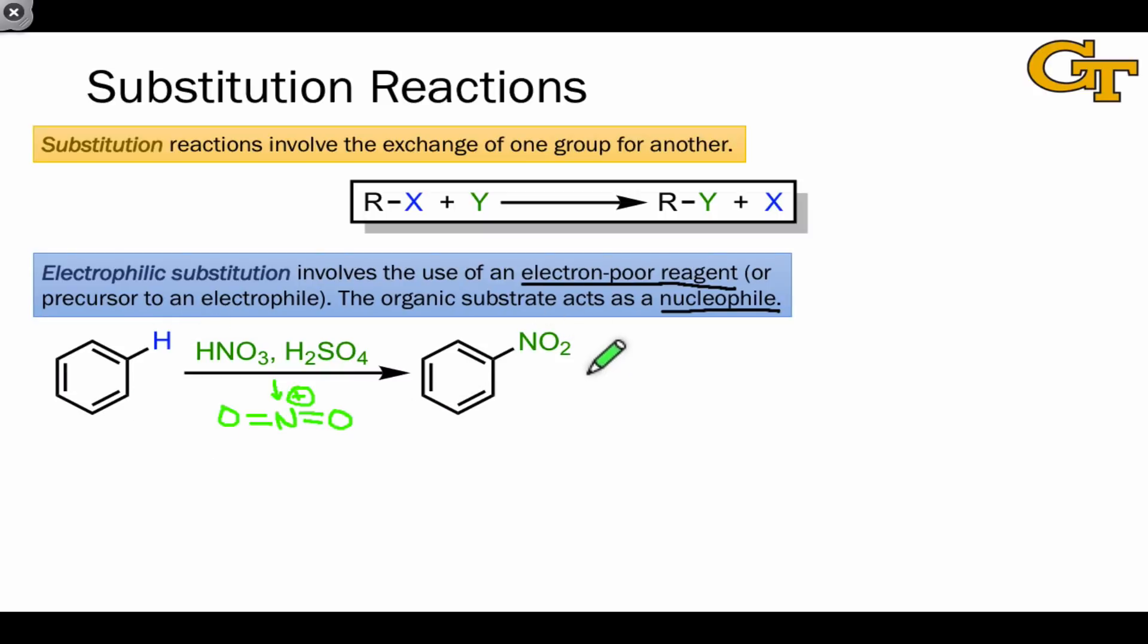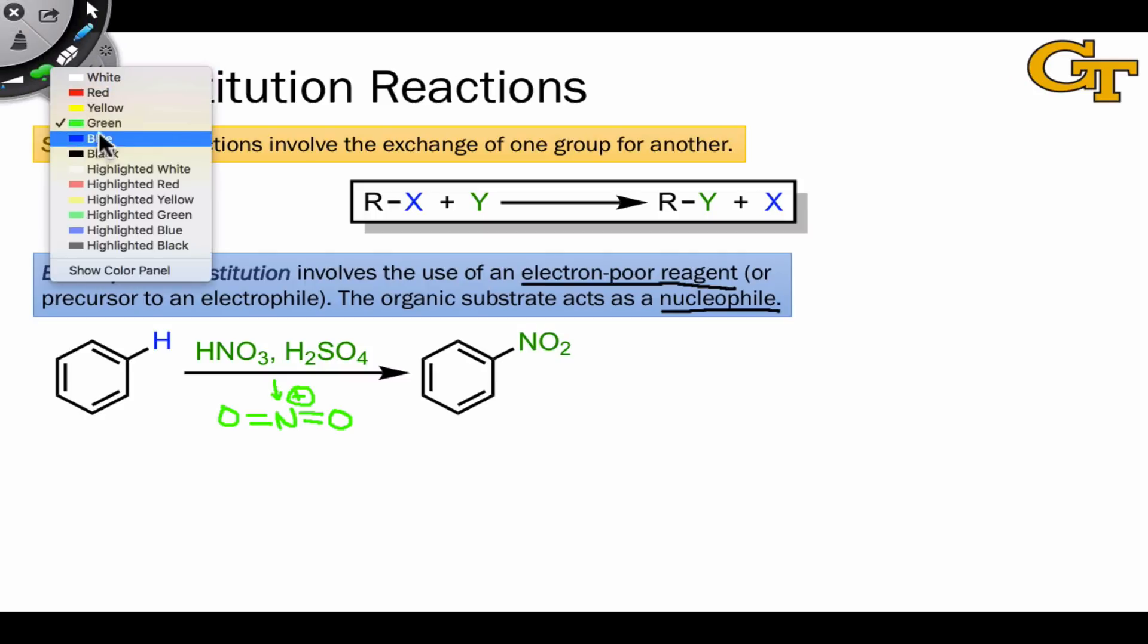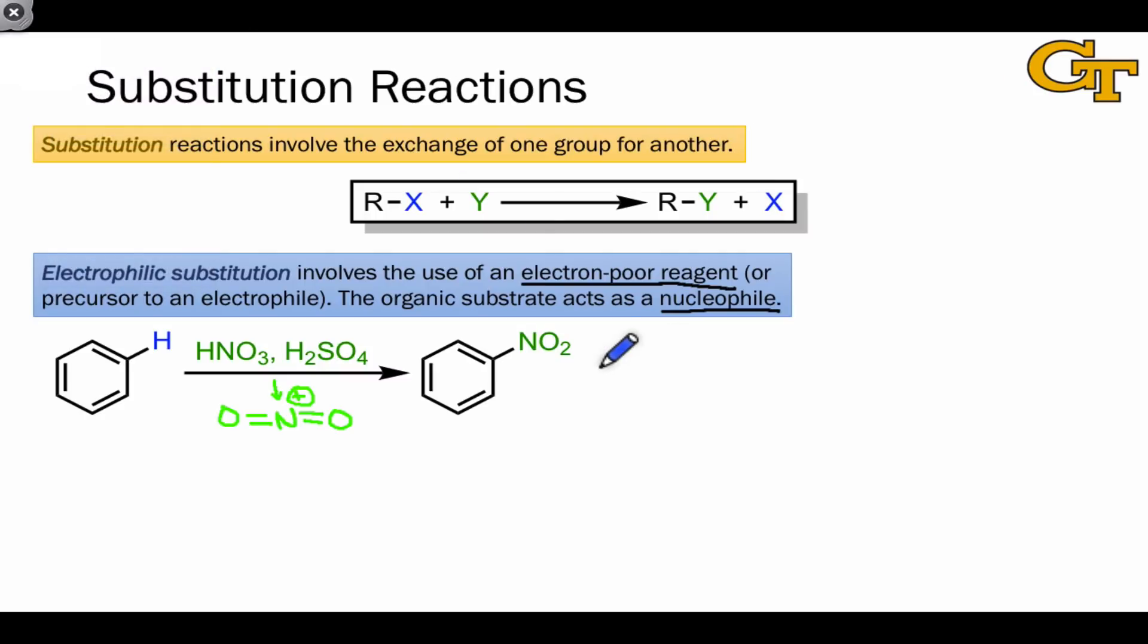And the byproduct of this process, the group that is substituted for, the group that comes off, is H+. We've exchanged one electrophile, H+, for another, NO2+. That's what makes this electrophilic substitution.